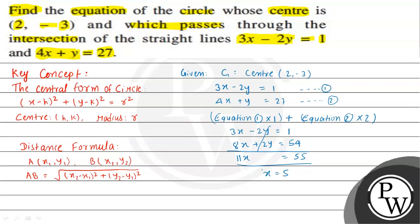Now substituting the value x equals 5 into equation 1: 3 into 5 minus 2y equals 1, so 15 minus 1 equals 2y, giving y equals 14 divided by 2, which is 7. So the intersection point of the two lines is (5, 7).